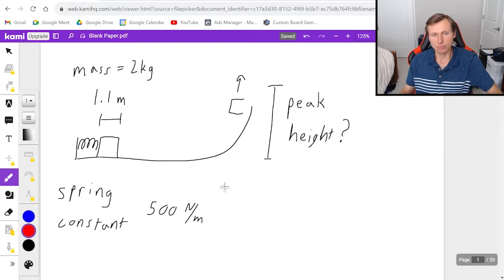So here's how we solve this one. First I have to say what my two points are. I would say point 1 is here when the spring is fully compressed and point 2 is here when it's at the peak height, whatever that is. Keep in mind that energy is conserved here. The reason why there's no friction, there's no other forces like pushing or pulling forces that would cause my energy to not be conserved.